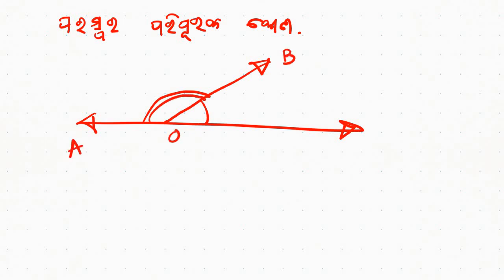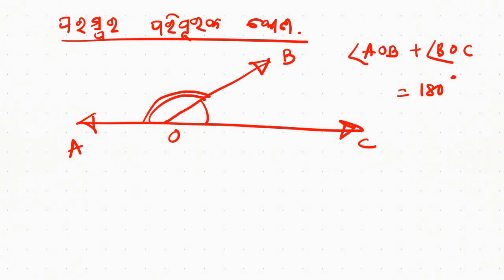You can use the formula: angle AOB plus angle DOC equals 1FC. I can use the formula to take a step away. With this formula, x is equal to 180 minus x — then the same thing applies with both cases. In this case, the same question applies.